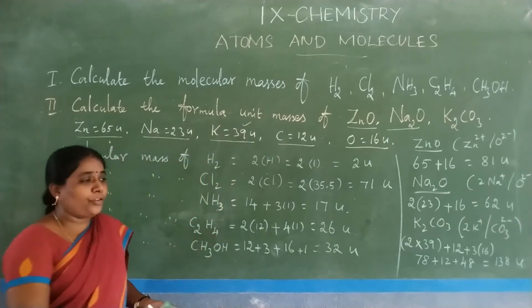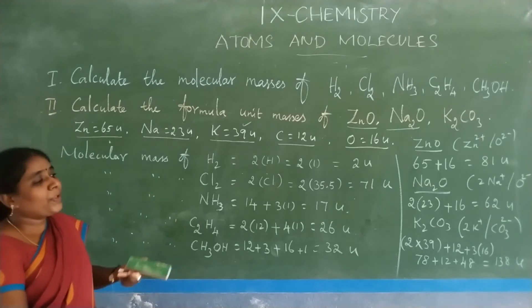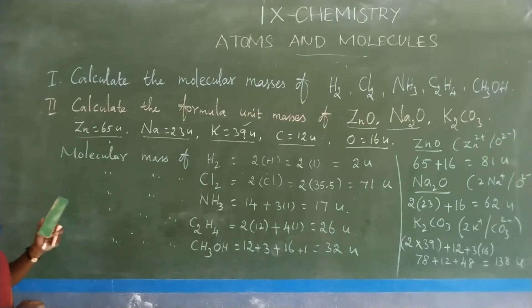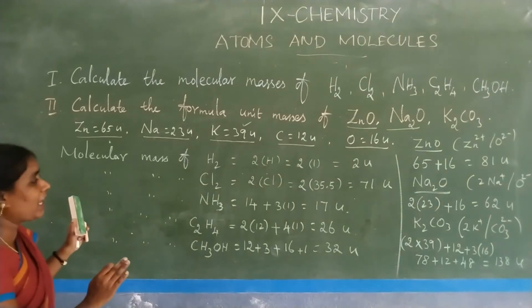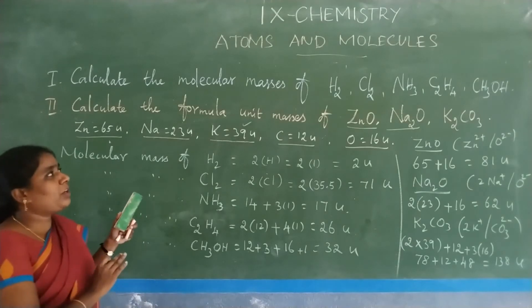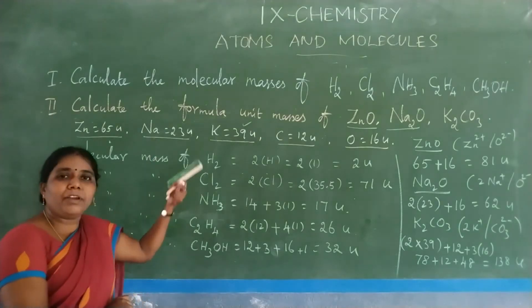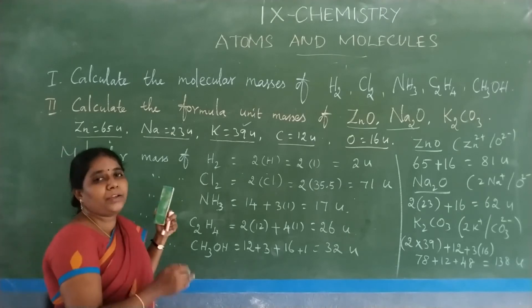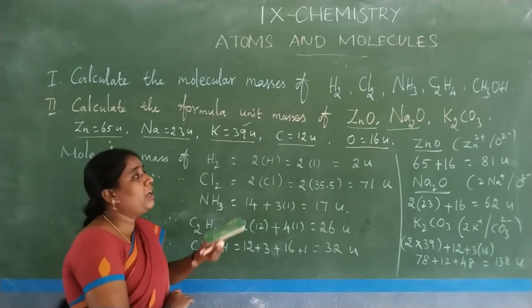So this is the calculation of molecular mass and formula unit mass. Both calculations are the same, but the difference is: molecular mass applies to molecules (sum of atomic masses of all atoms in a molecule), while formula unit mass applies to ionic compounds (sum of atomic masses in the given formula unit). The unit for both is U.